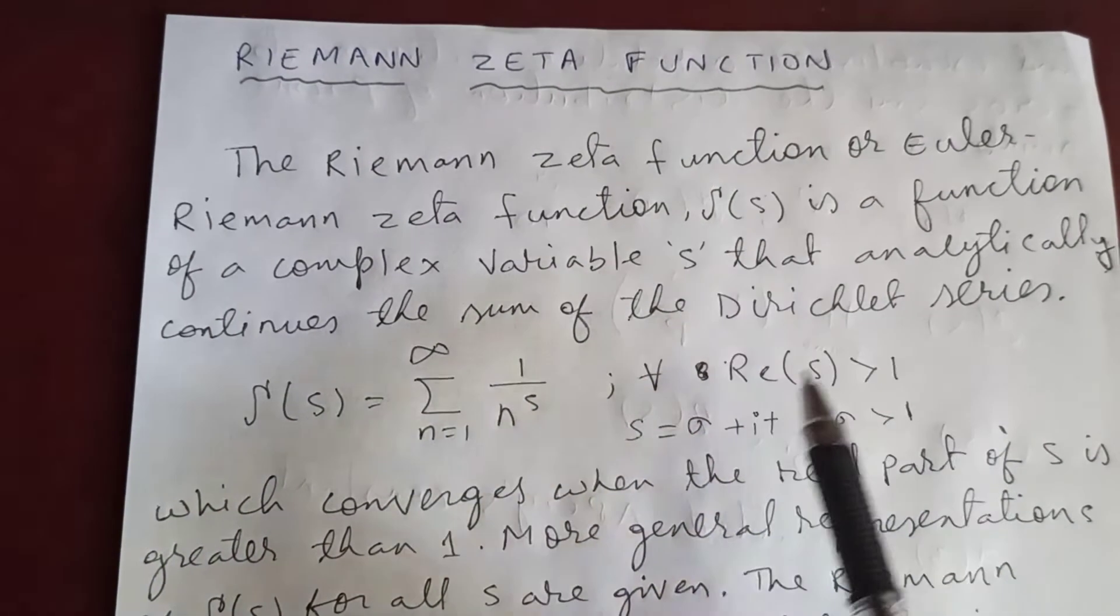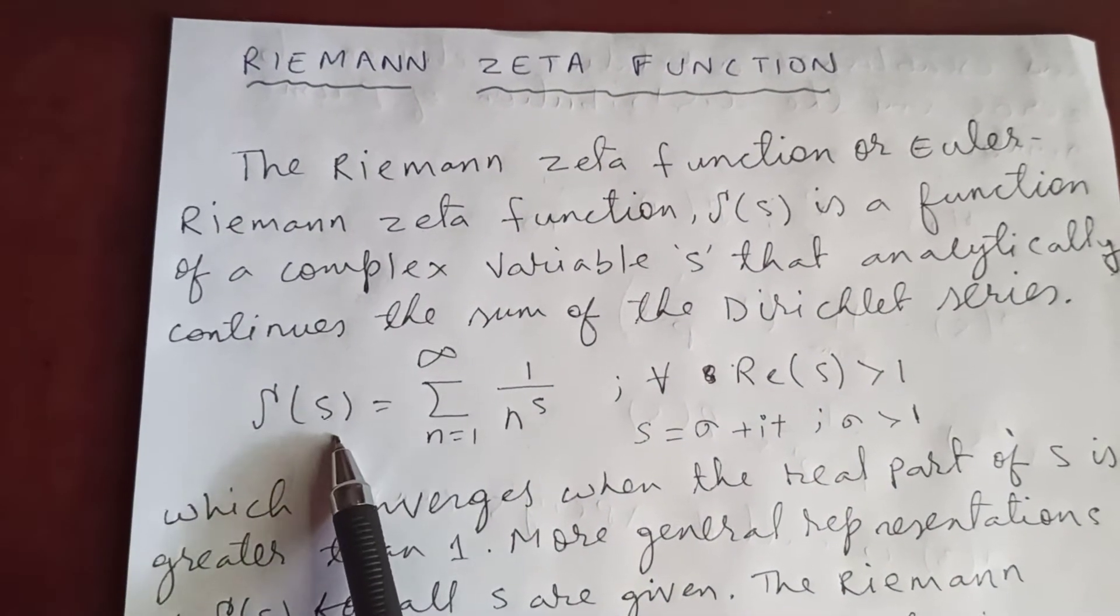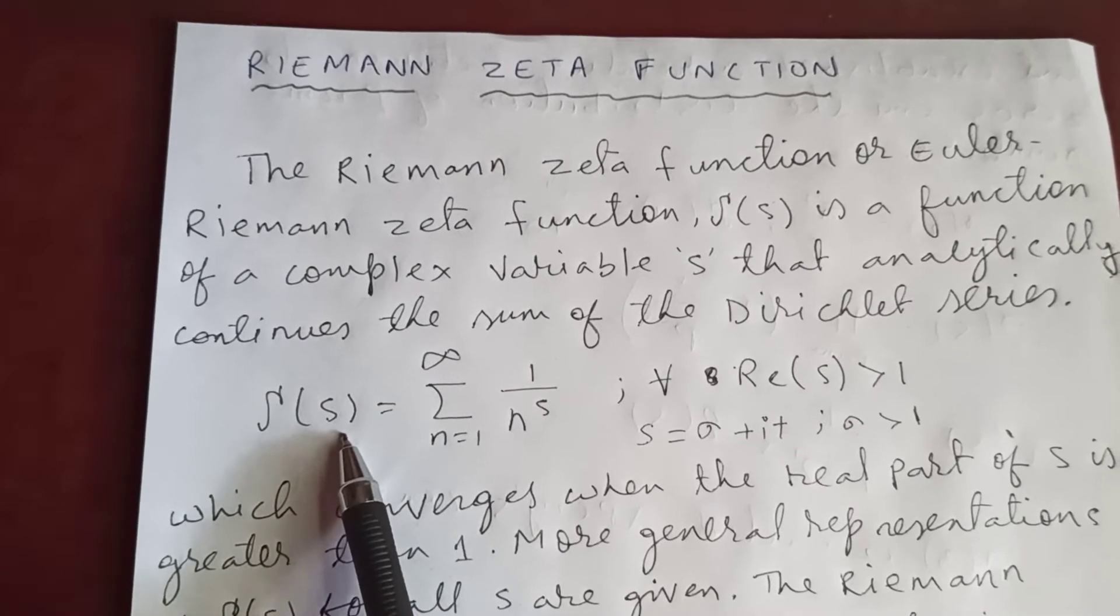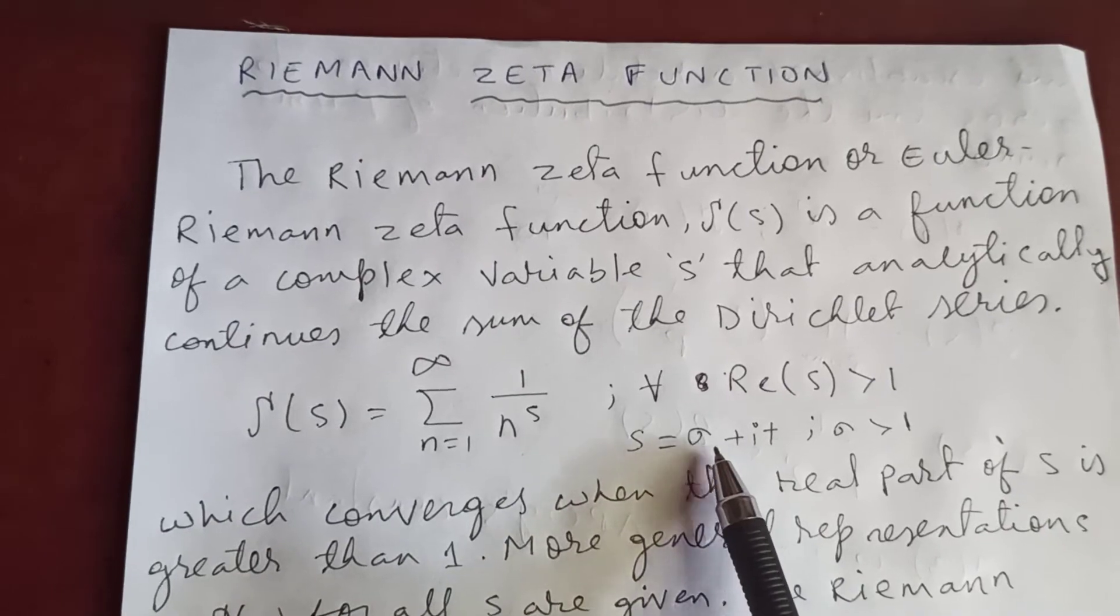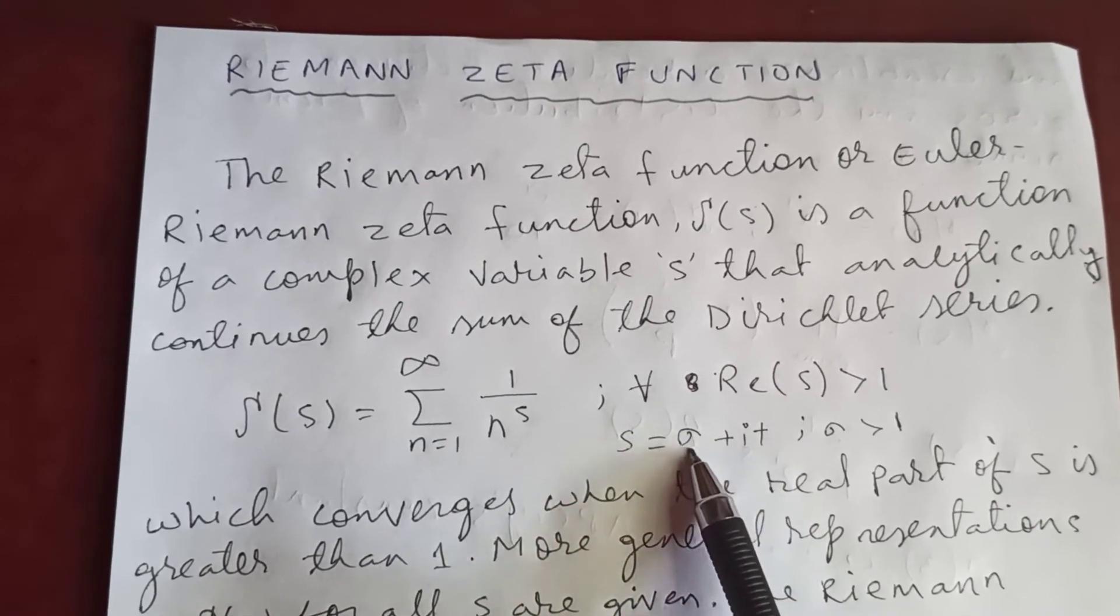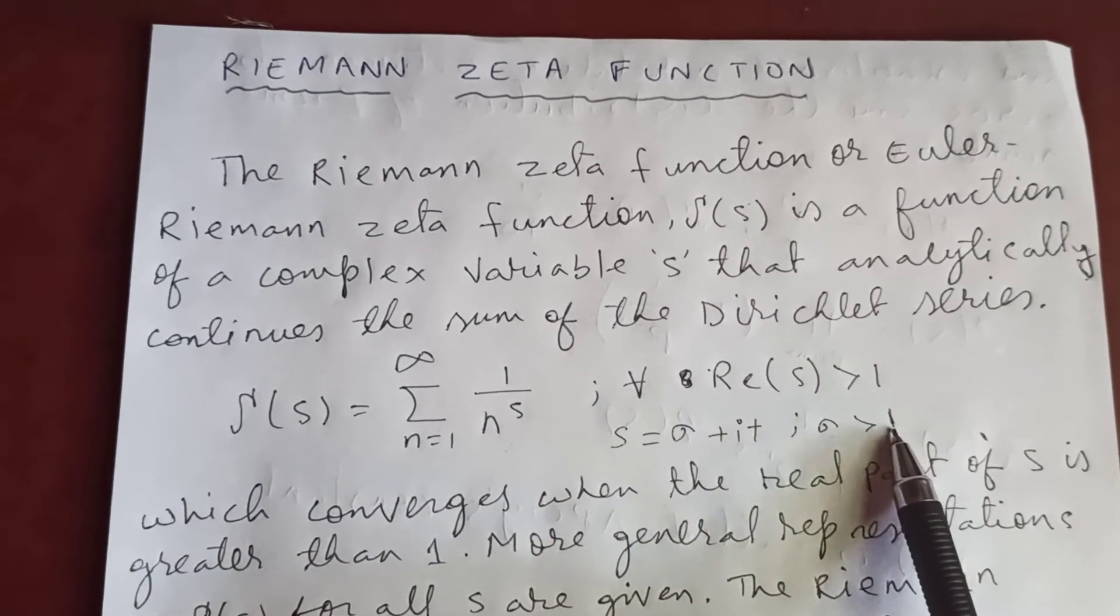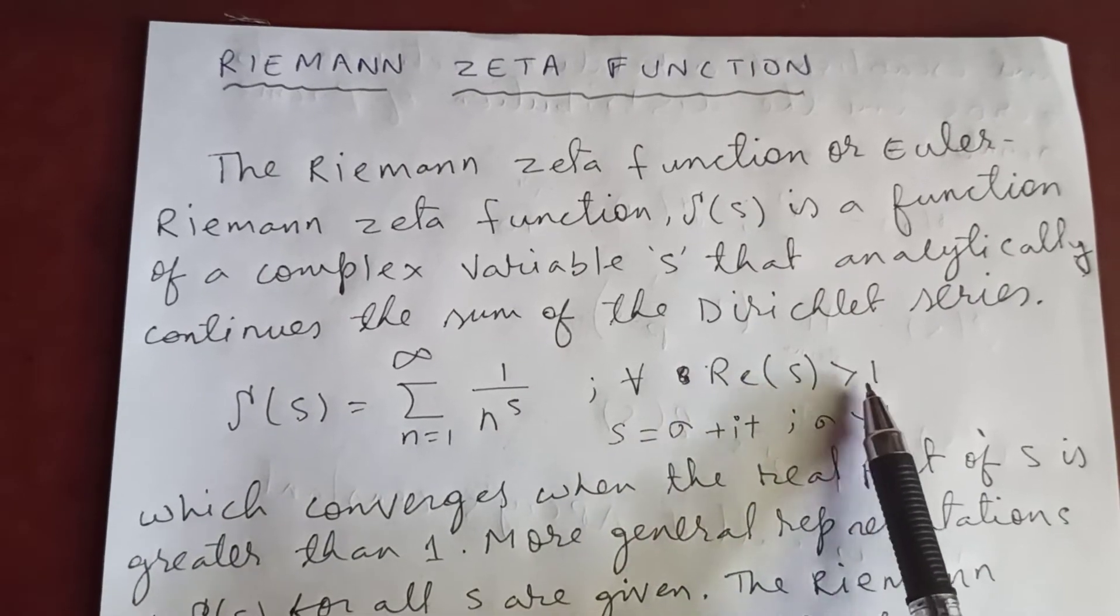This s can be complex, s equals sigma plus i t. So this must be greater than 1, meaning the real part of s is greater than 1.